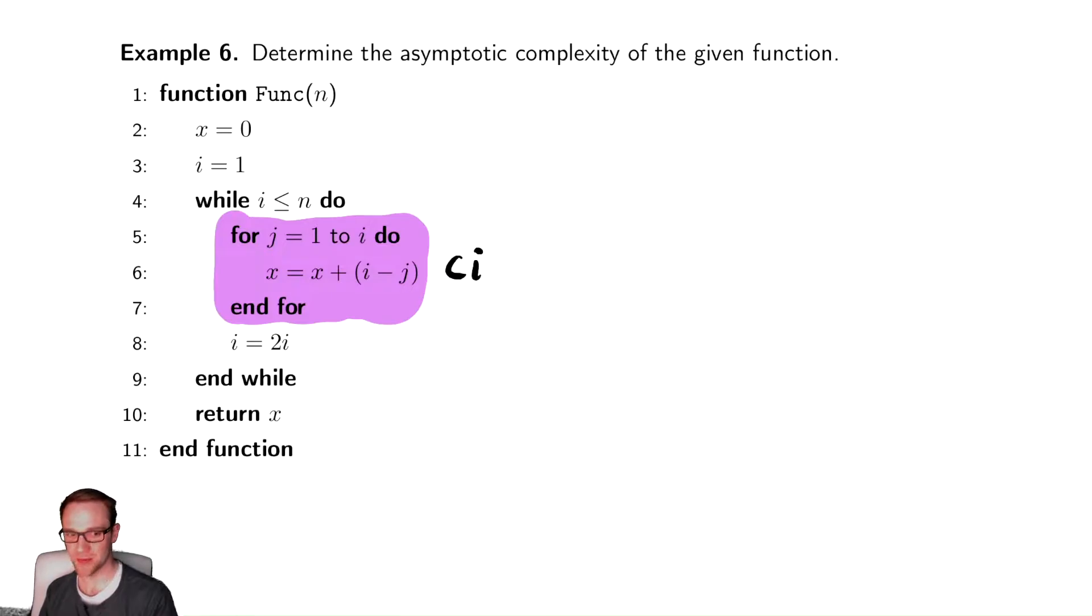Like I said, we've already done this when we had for loops, we ignored how long anything but the most nested statement took. Here, the statement that is as nested as possible within the for loops is here. And that is the one that we're going to focus on. So that takes ci time.